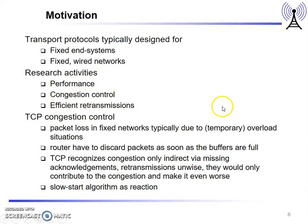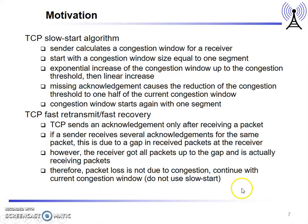The research issues behind TCP protocol are performance, congestion control, and efficient retransmission. In TCP congestion control, packet loss in fixed networks is mainly due to buffer overload — when buffers are full, the router discards packets. TCP recognizes congestion through missing acknowledgements, and retransmission takes place.